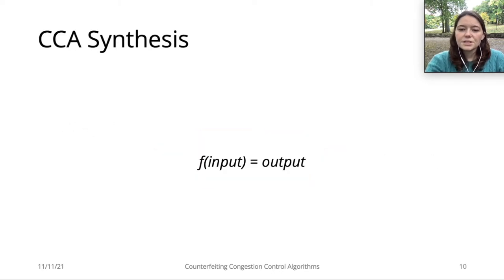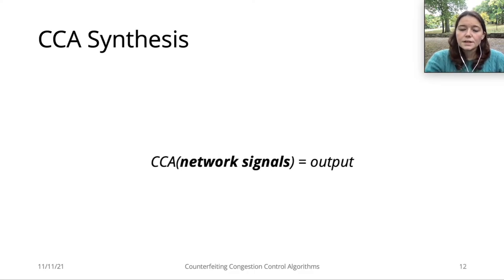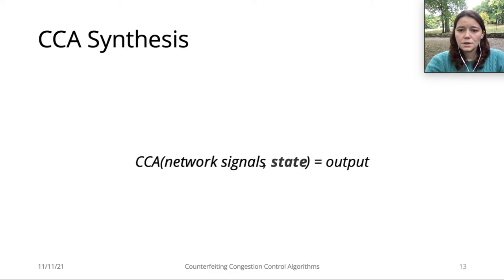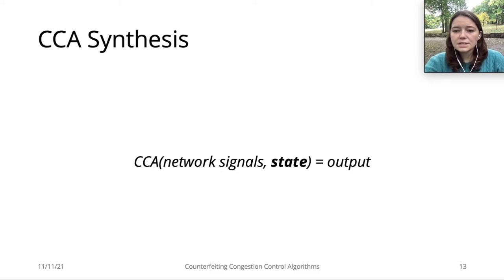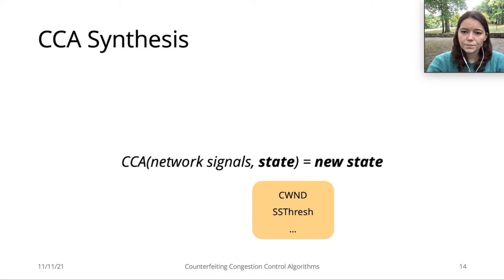Our goal is to use program synthesis to reverse engineer a CCA. We consider the same input-output structure for the CCA. The CCA's inputs are network signals that tell us the conditions of the network at any given time, such as ACKed and sent packets, the maximum segment size, or the round-trip time. Besides the network signals, the CCA also considers its current state as input, and the CCA state includes values such as the congestion window size and the slow start threshold. The output of the CCA is then the new CCA state.